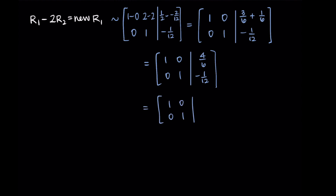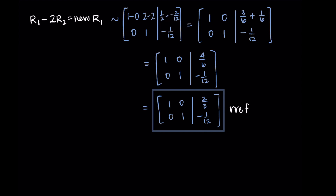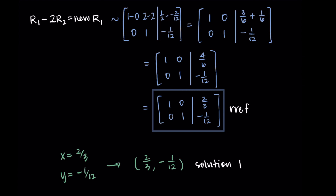After writing out the matrix through its simplification steps, I'm finally getting to the reduced row echelon form. To read off the answers: the first row gives us 1x plus 0y equals two-thirds, so x equals two-thirds. The second row gives us 0x plus 1y equals negative one-twelfth, so y equals negative one-twelfth. Our solution is the point (two-thirds, negative one-twelfth).